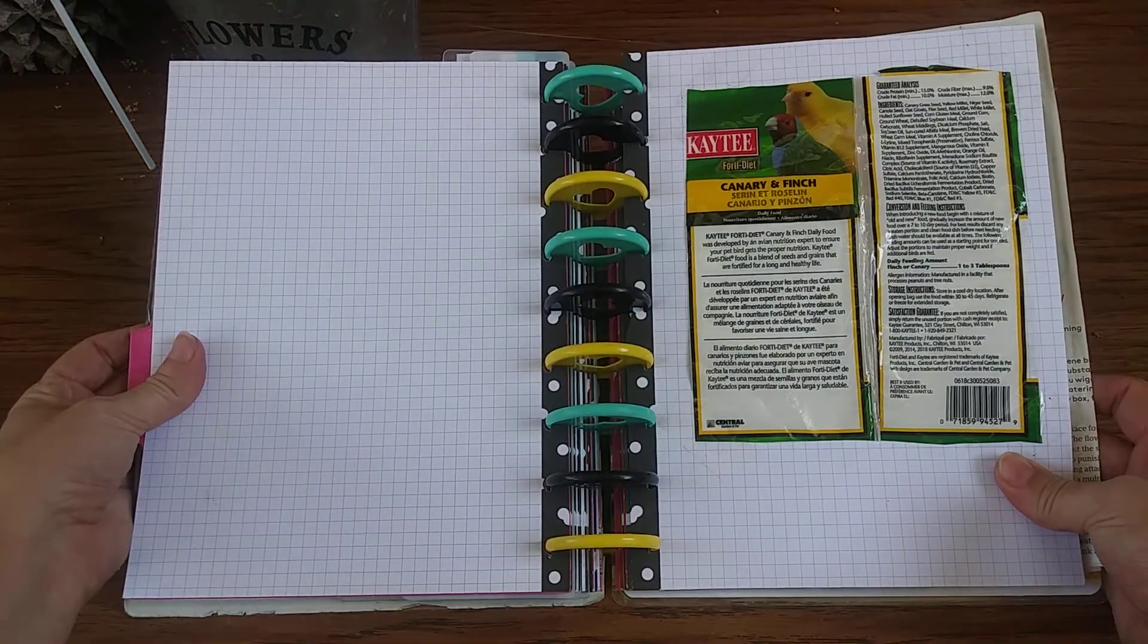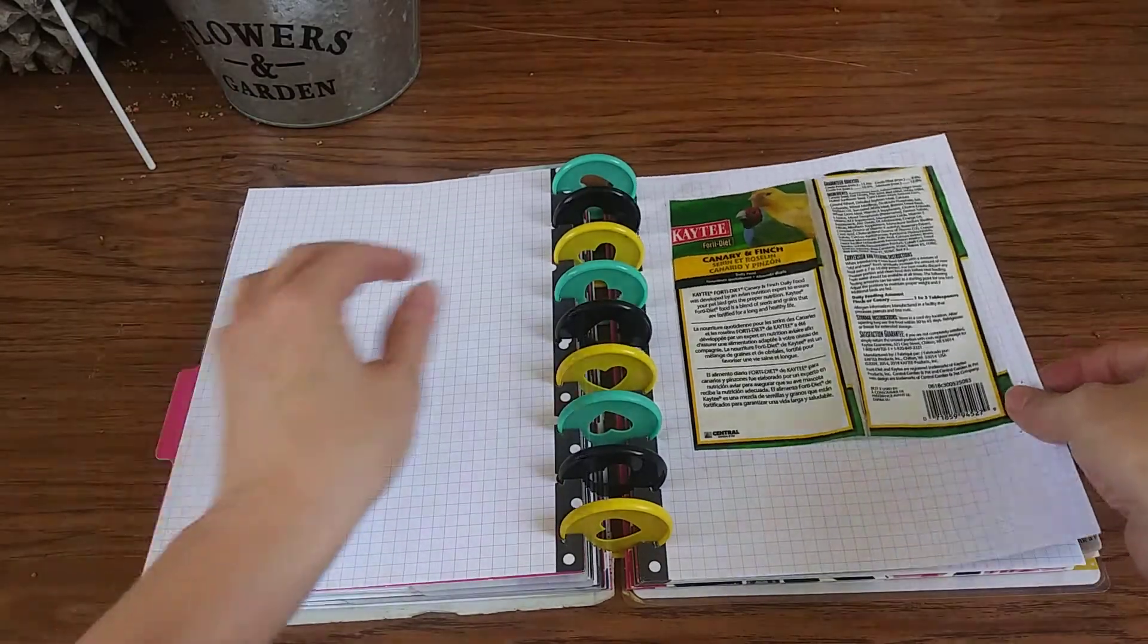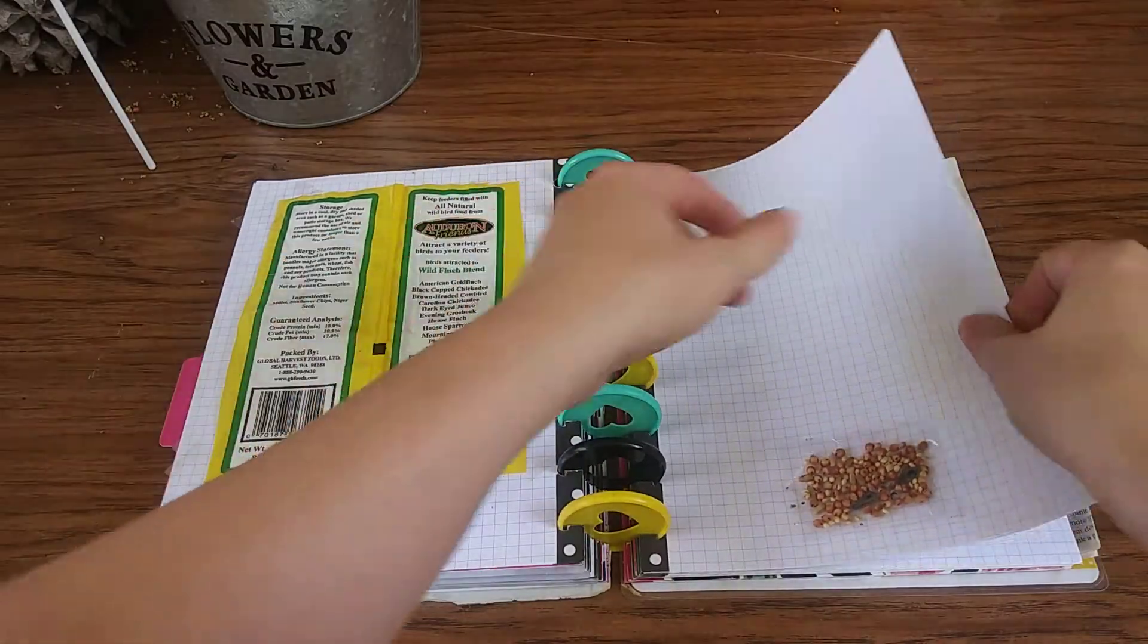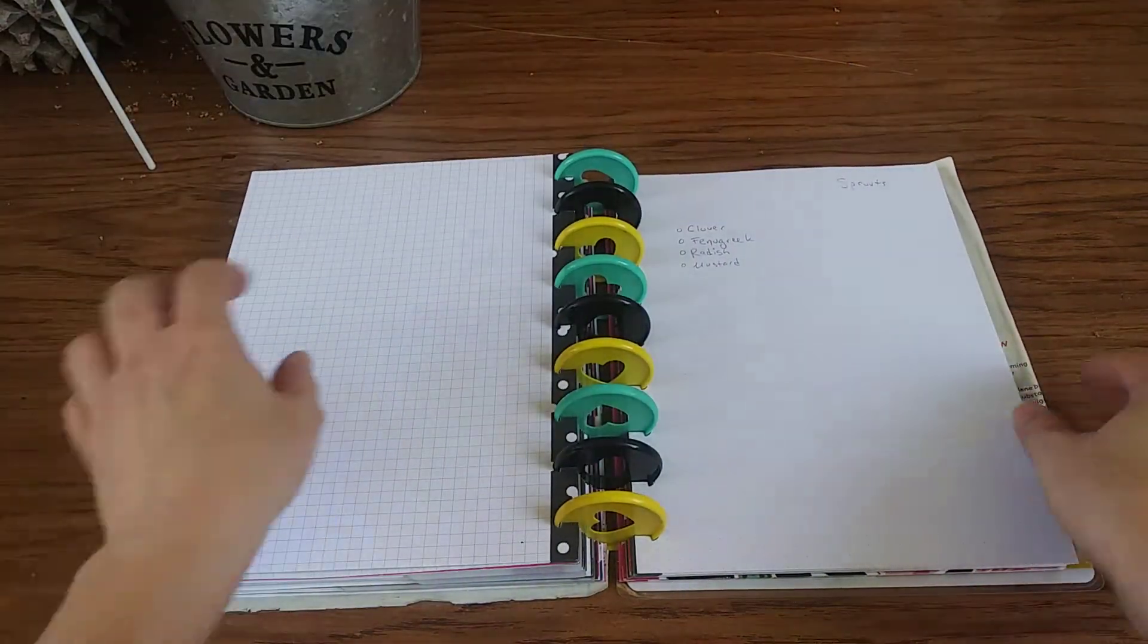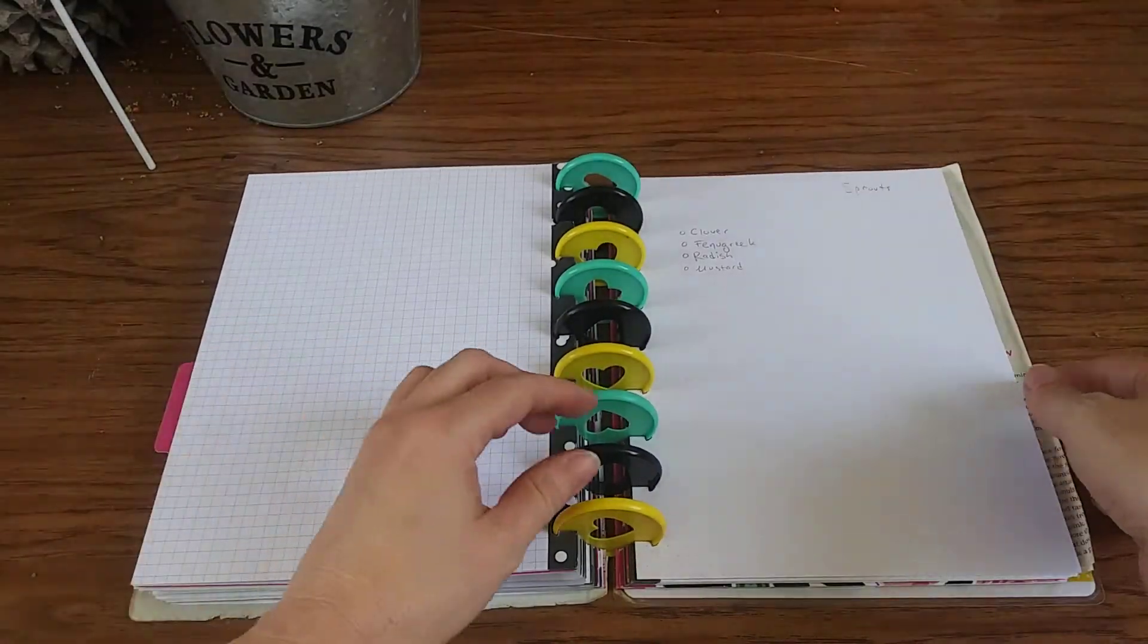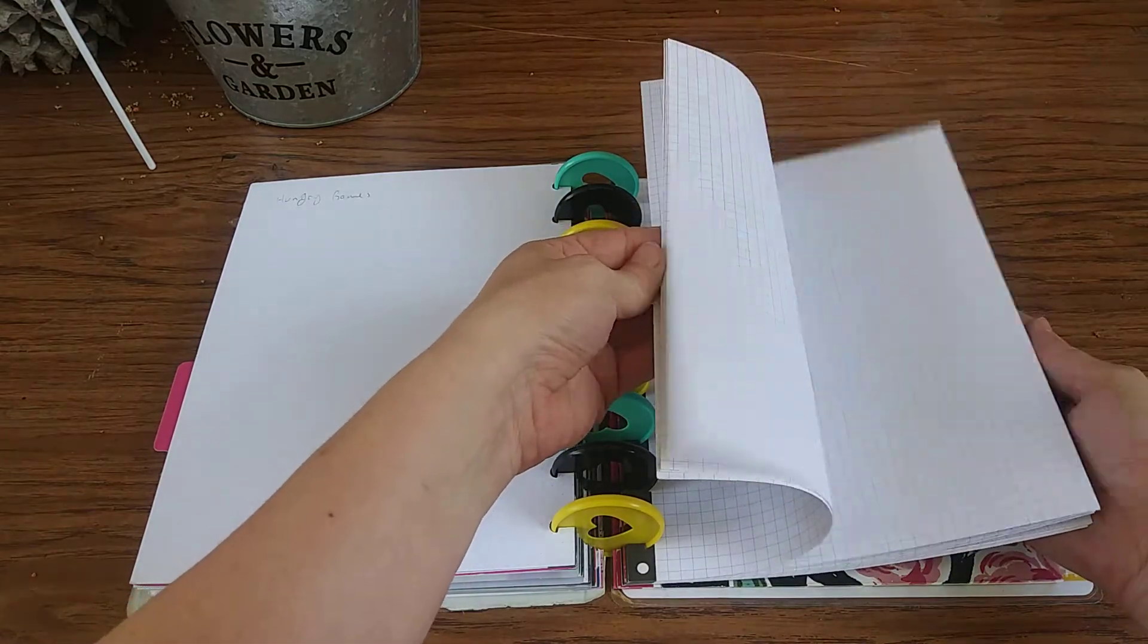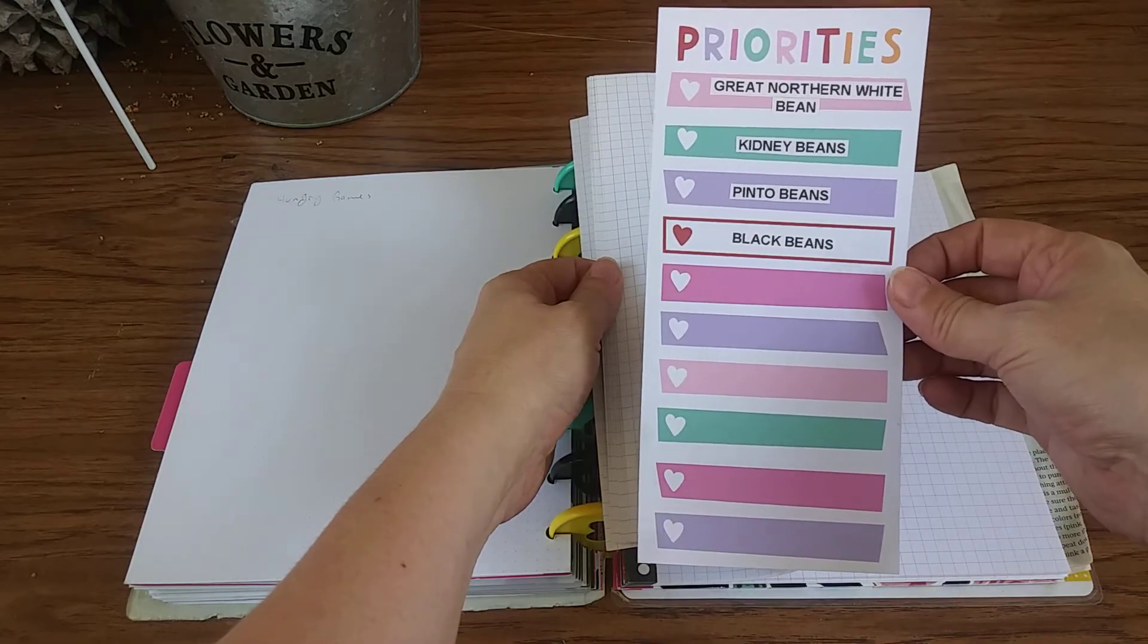I also have my birdseed stuff in here because I do try to grow the birdseed from time to time, especially for the chickens. An example of the birdseed itself. And I do have a sprout section since I do grow sprouts from time to time, notes on that kind of stuff as well. I do have notes on these are the beans I'm going to try growing for next year.